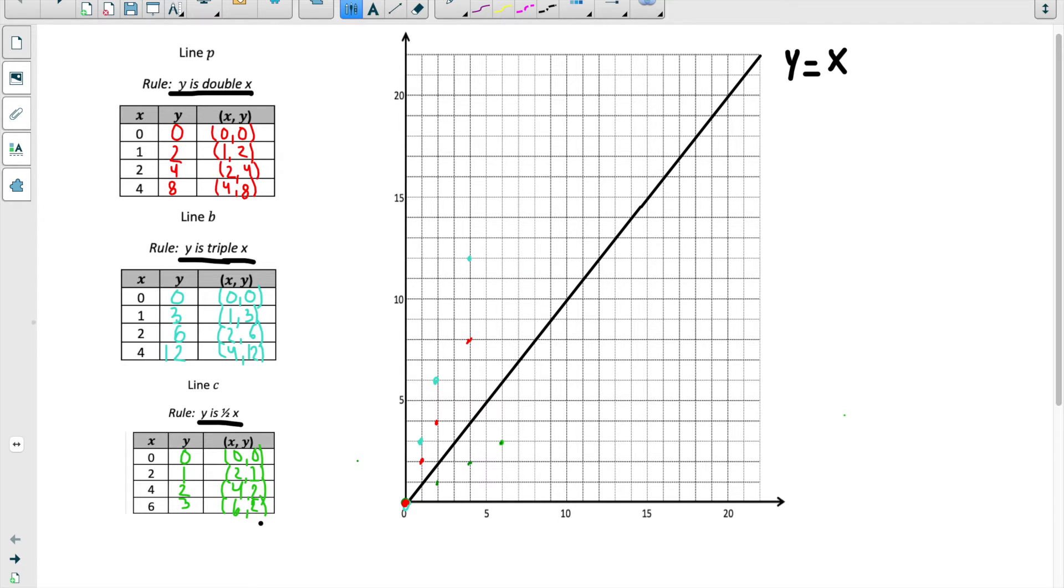I'm going to first draw this line p, y is double x. I'm going to draw it through the points, and then I'm going to continue it on as well so we can really see what's going on. So that is line p. I'm going to label that.